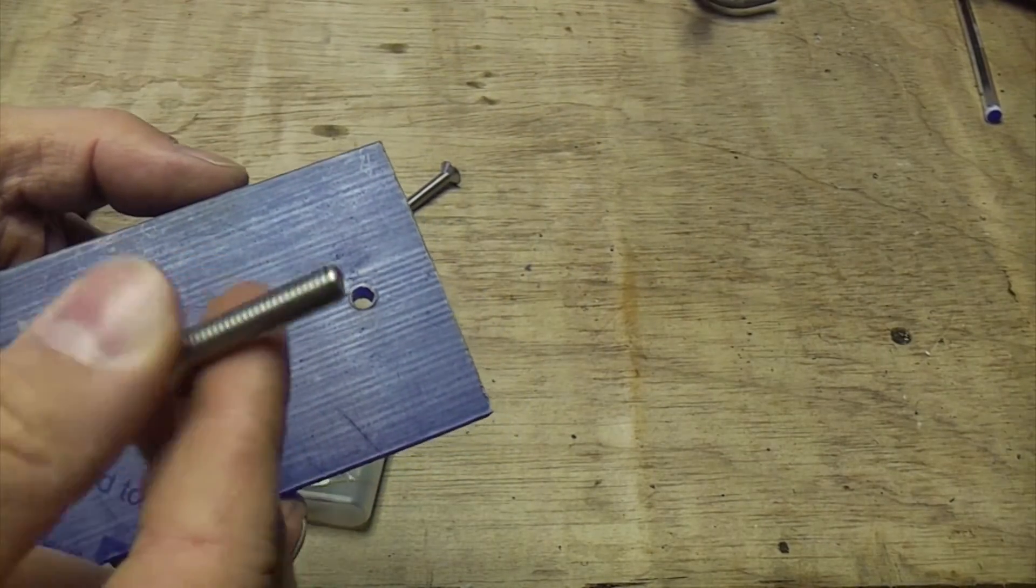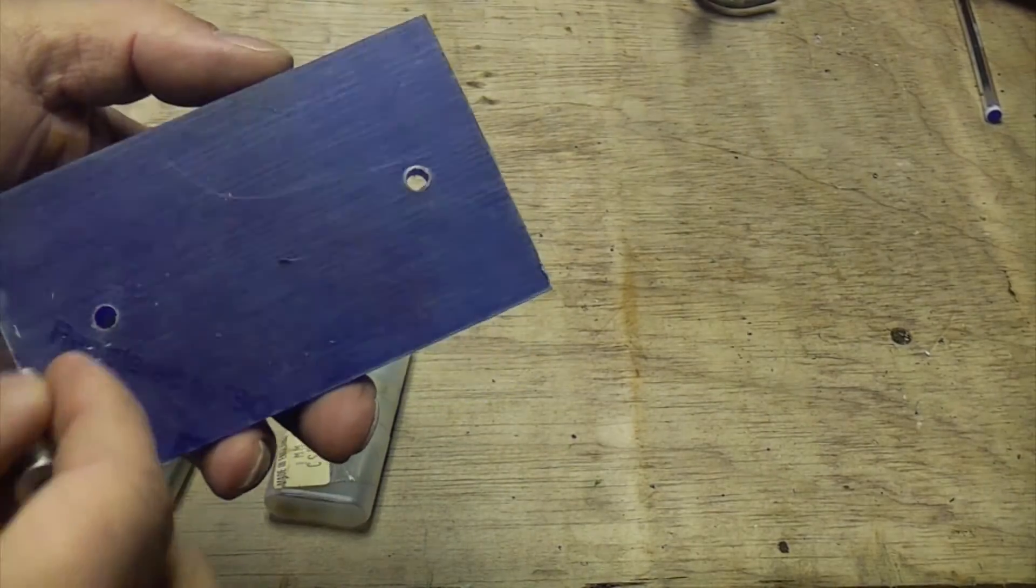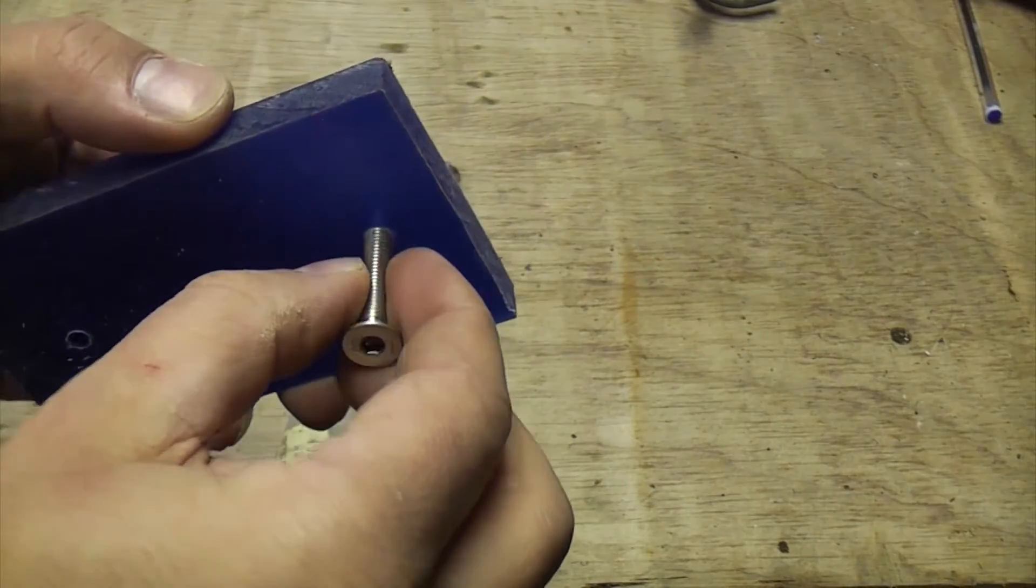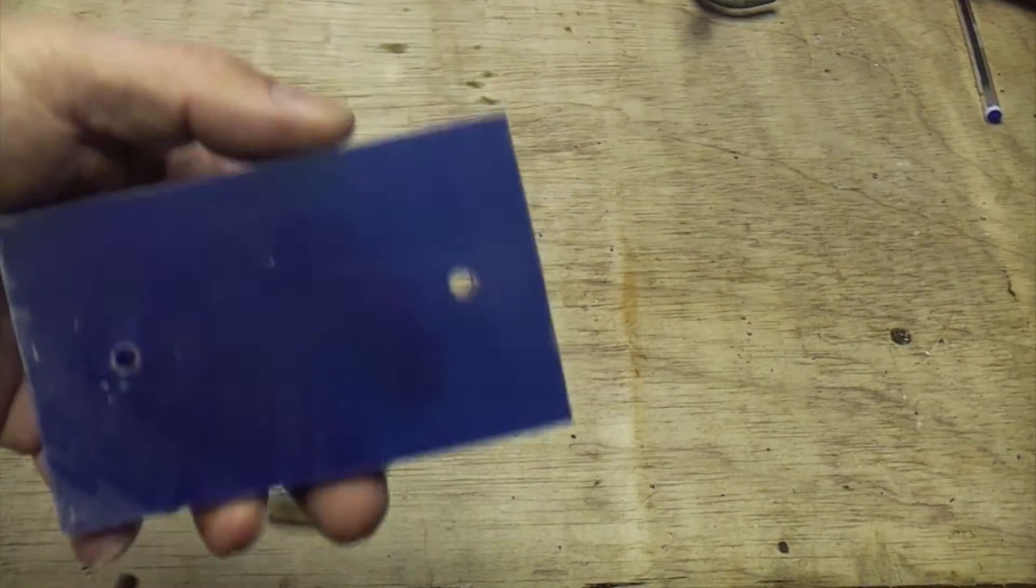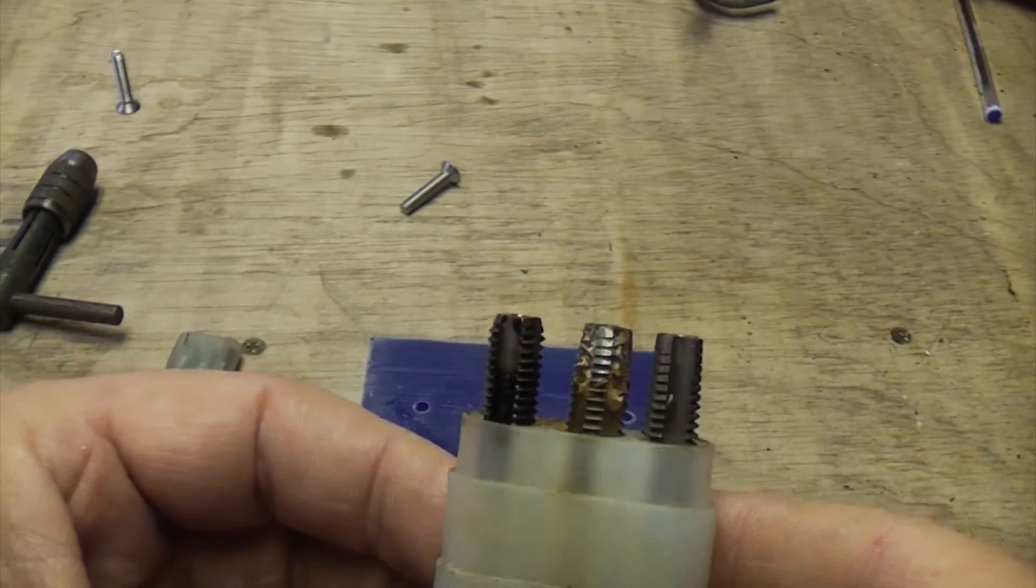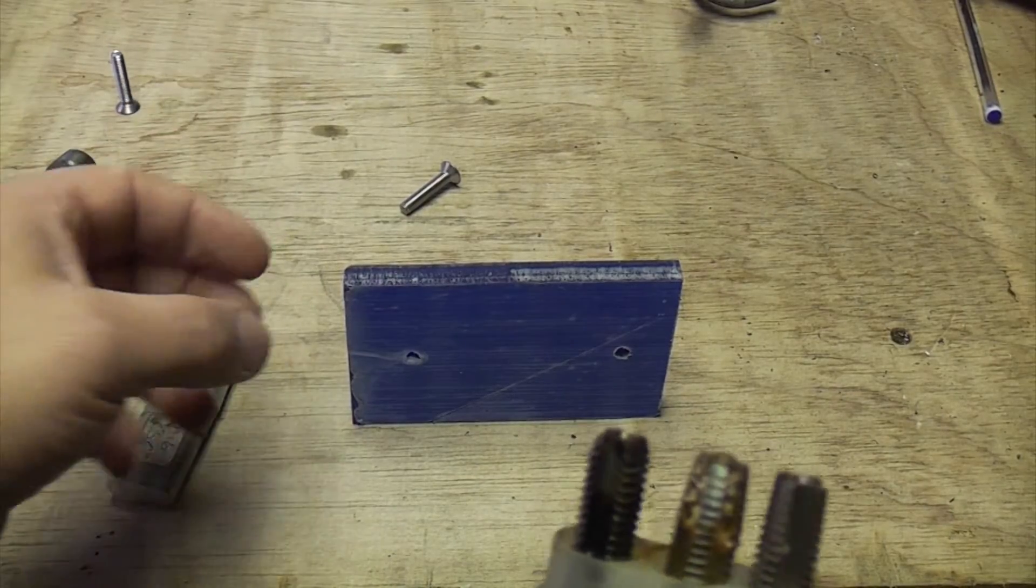Here we've got an M6 countersunk screw, so I'm just going to show you now how to tap a couple of holes in there and then we can screw this screw into there. This particular set of taps here is used for tapping a hole in a blind piece of material—they call it a blind hole.